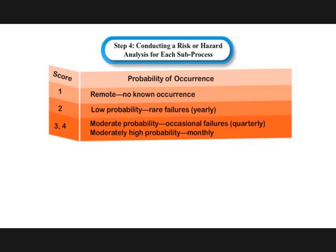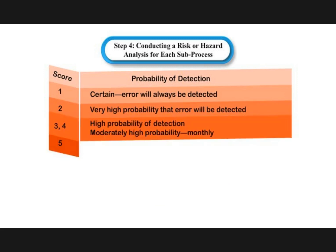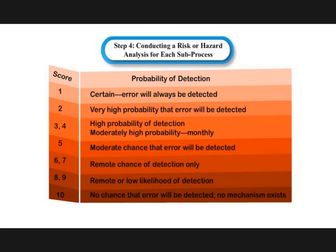The higher the ranking on a scale of 1 to 10, the more severe is the effect of a potential failure mode. In determining the probability of a failure mode occurring, reference should be made to data from previous adverse events and to the personal experience of team members. The higher the ranking on a scale of 1 to 10, the more likely it is for the failure mode to occur.